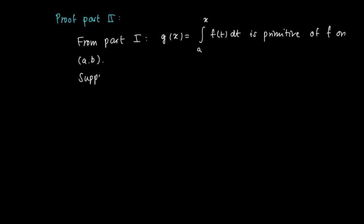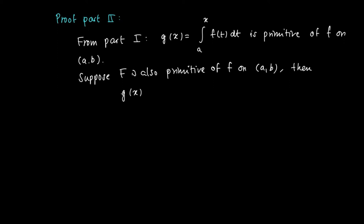Now suppose we have an arbitrary primitive, capital F, for f on the open interval (a, b). Since primitives on these intervals differ by a constant, we may express g(x) as F(x) plus c for some constant c.